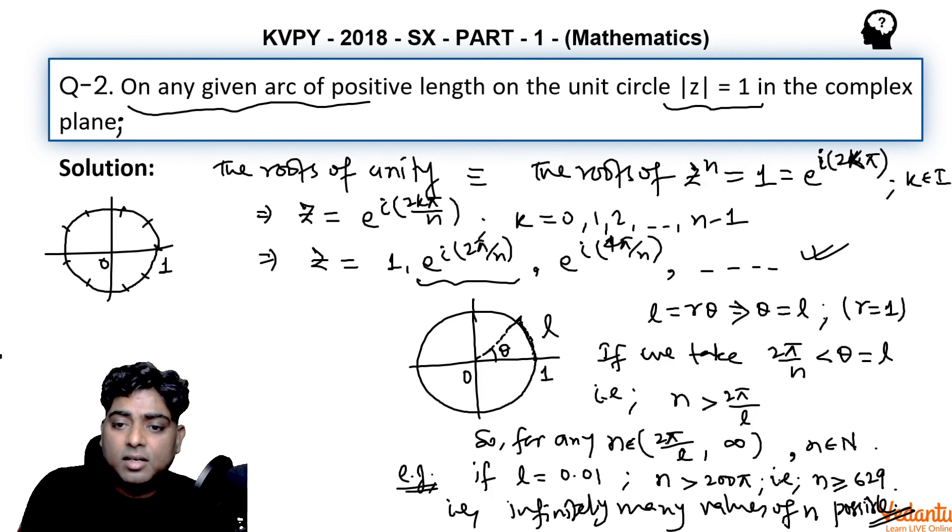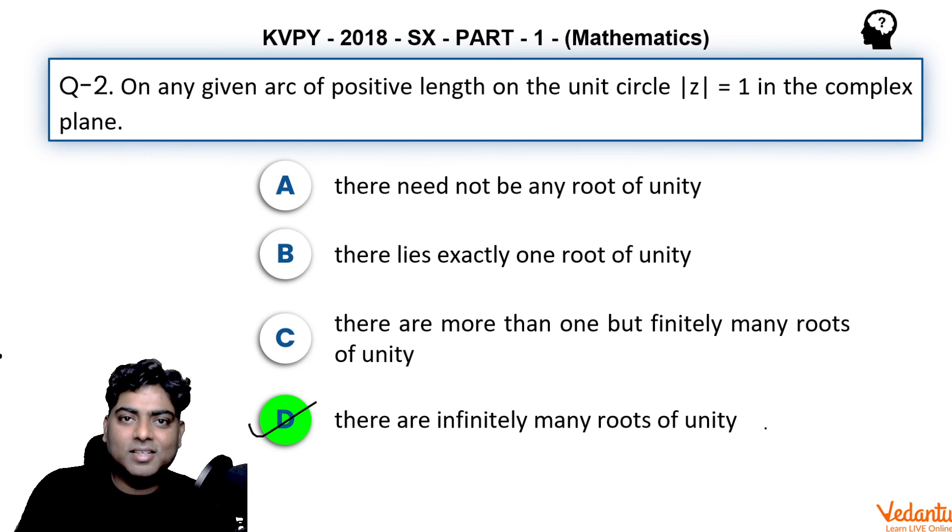So for any arc length, given arc length l, we have to take n greater than 2 pi by l. Any n in the interval 2 pi by l to infinity—so infinitely many values of n, and correspondingly infinitely many roots of unity will fall upon that. I hope you understood the solution and thank you for watching. Stay tuned for the next question. Thank you.